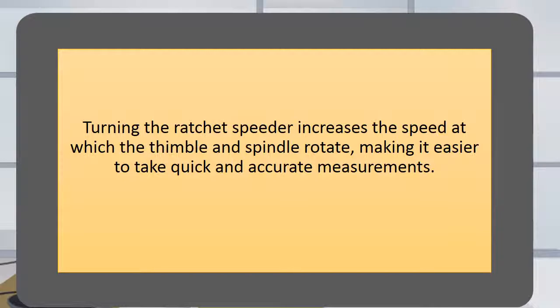Turning the ratchet speeder increases the speed at which the thimble and spindle rotate, making it easier to take quick and accurate measurements.